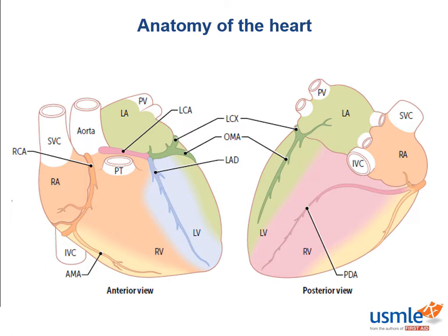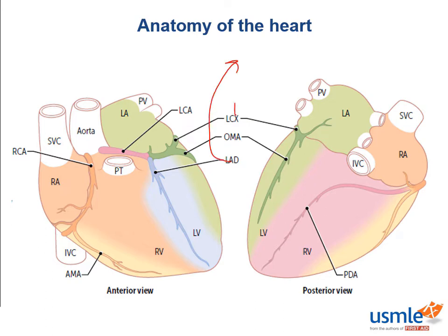Now what about the left circumflex? It's called circumflex because it winds around the heart to supply the posterior wall of the left ventricle. Note that this view is anterior and this is posterior. The left circumflex supplies the anterolateral papillary muscle, which is why it's not the most commonly ruptured papillary muscle because it's also supplied by the LAD.